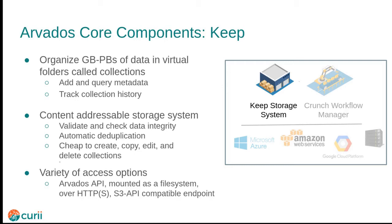For the backend, the actual data blocks can be stored on a conventional file system, in S3 buckets, or in Azure blob storage, using the block hash as the file name. On the front end, Keep provides a variety of access options. You can use the Arvados SDK, which uses the block-level API and reassembles files on the client side, but you can also use higher-level access methods, including a FUSE mount, which lets you access Keep more or less like a regular POSIX file system, or over HTTP using WebDAV, or using an AWS S3-compatible API, where an Arvados collection acts like a bucket and enables applications that already support object storage to access files in Arvados.